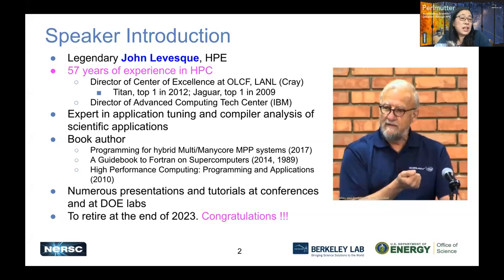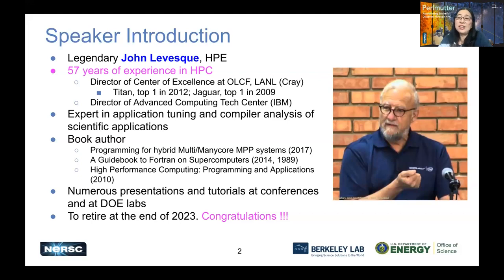Before that, John worked at IBM as Director of Advanced Computing Technology Center. John is truly an expert in application tuning and compiler analysis of scientific applications, has written several books on high-performance computing, a guidebook to Fortran, and recently programming on hybrid multi-core MPP systems. He has given numerous presentations and tutorials at conferences, workshops, and to DOE labs and NERSC. John Levesque is doing his last training today — he's going to retire at the end of 2023.